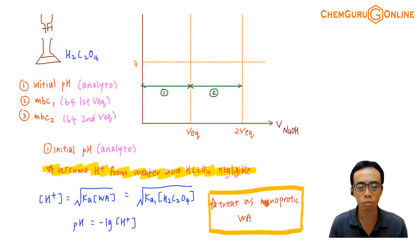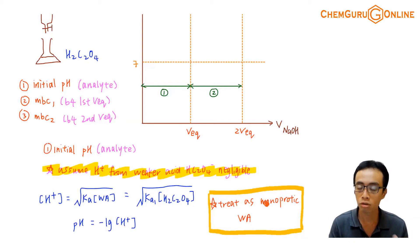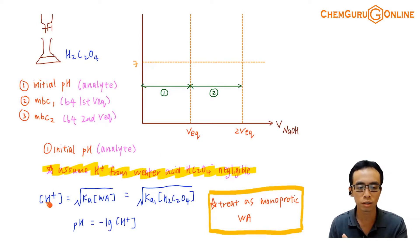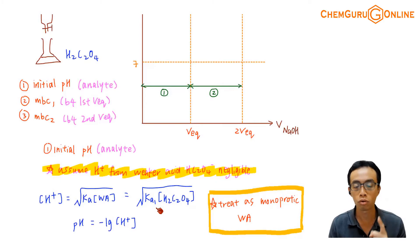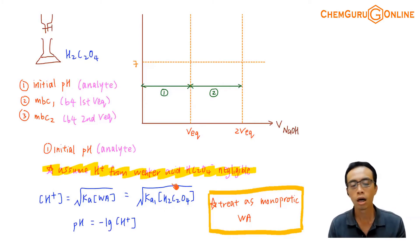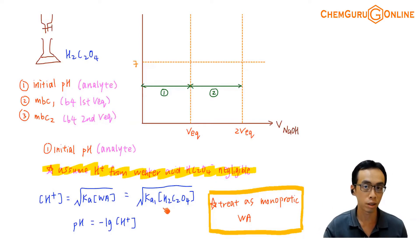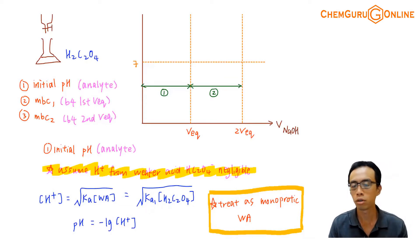Even if it is a diprotic species, if I want to determine the pH of the solution, I just treat it as monoprotic — I only care about the first dissociation. So therefore H⁺ = √(Ka × C), the formula of a weak acid. My weak acid will be the first acid, H₂C₂O₄. So therefore the Ka I'm using, I have to use Ka1. If the acid is HC₂O₄⁻ (the second acid), then I'll use Ka2, and from there I can determine the pH of the solution.